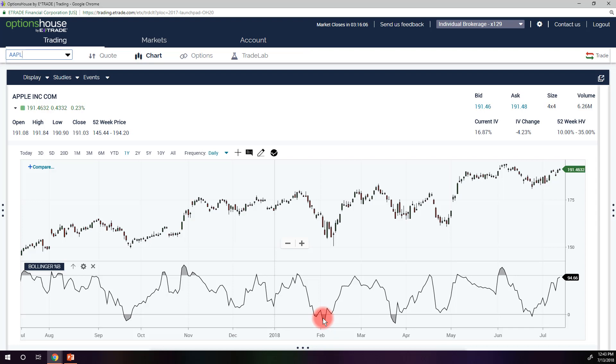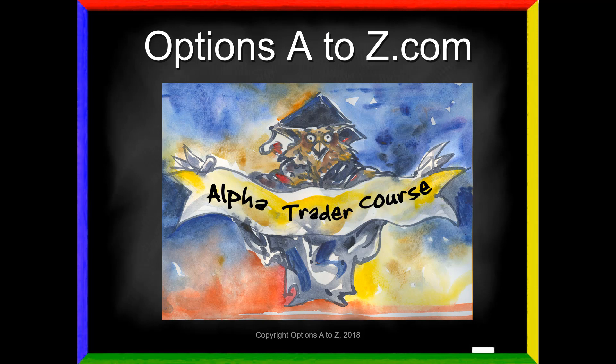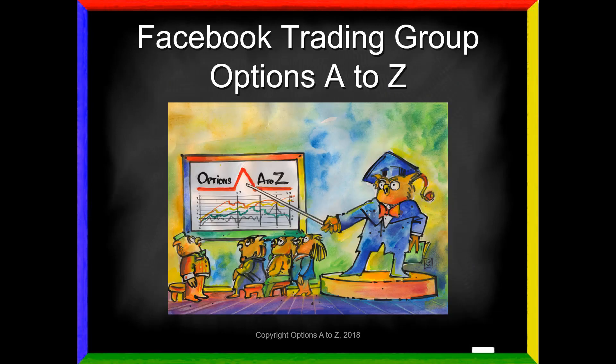Now you have a different way of displaying and reading Bollinger Bands. If you'd like to know more about the art and science of options trading, please check out the AlphaTrader course at OptionsAtoZ.com. You can also join us on the Facebook trading group, OptionsAtoZ — free website, lots of great information, free videos, market commentary. If you're new to options and looking for a great way to get started, please join us at the OptionsAtoZ Facebook trading group. We'd love to see you there.